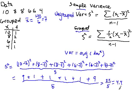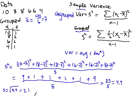Now of course if we wanted to finish this off and actually find the standard deviation, the standard deviation is just going to be the square root of the variance of 4.4, which comes out to about 2.1.